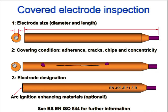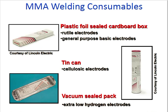For a covered electrode, the size is the diameter and the length. The covering condition includes cracks, chips, and concentricity. The electrode designation under BSen 499 is E5032NiB7H10. There is also arc ignition enhancing material, which is optional. Regarding packaging: rutile electrodes use plastic foil seal or cardboard box; cellulosic electrodes use tin cans; and extra low hydrogen electrodes use vacuum sealed packs — always totally vacuum — so you should know which electrode goes in which box.